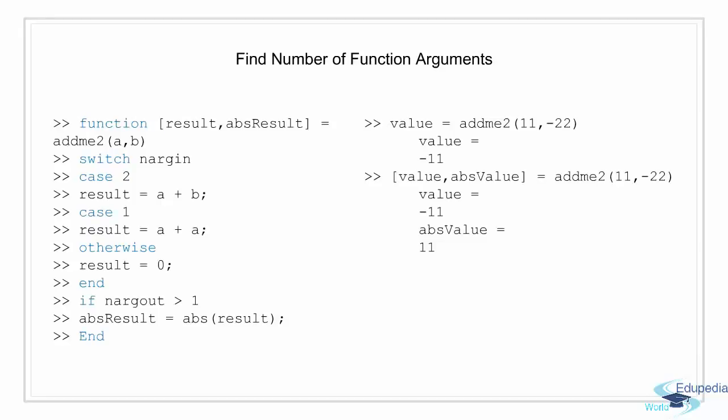Similar to nArgIn, we have nArgOut that identifies the number of outputs requested by the user. Here I have an ADMI function that can return one or two outputs — that is the result and the absolute result. First I identified the number of inputs using nArgIn and then the number of outputs requested using nArgOut. A result is passed in each case. When the need for a second output arises, we check it using nArgOut. At the end of the function there is an if statement where we check whether the requested argument count is greater than one. If it is, we also return an absolute result — the absolute value of the final output.